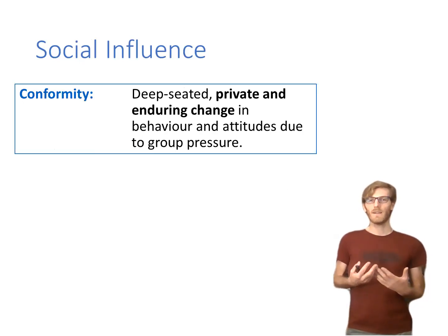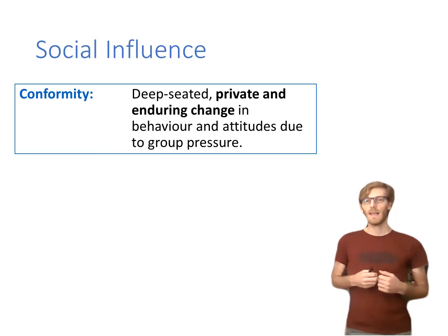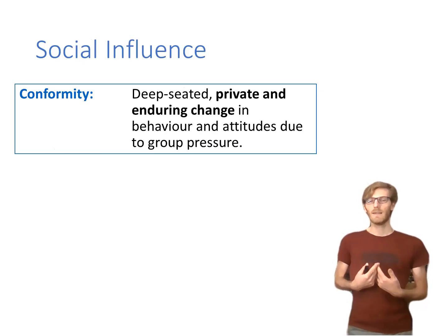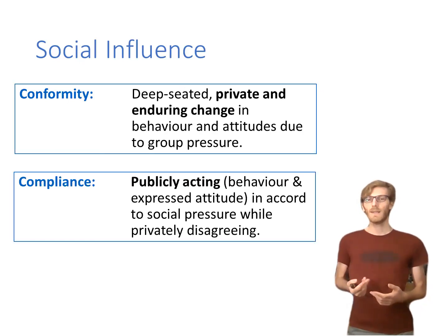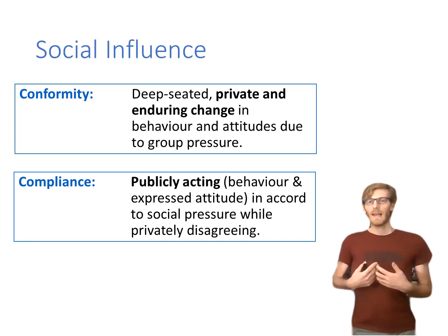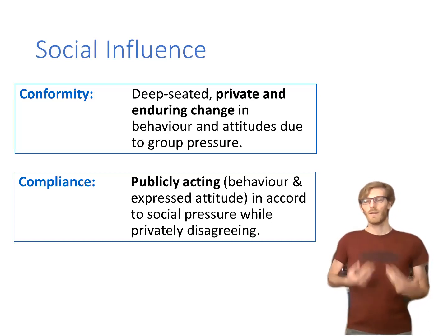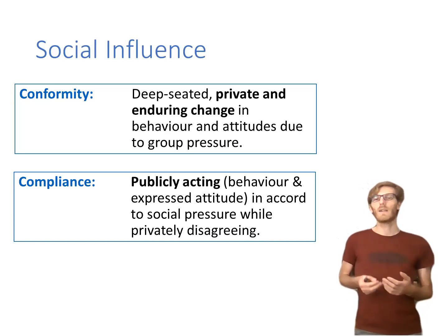When we think about the concepts behind social influence, the first is conformity — if I really change my beliefs based on group influence. In the Asch line study, that would mean genuinely thinking that whatever other people say is the true answer, rather than what my own eyesight tells me. Compliance is quite different: it's only about changing your exterior behavior. I publicly act in accord with what I believe the others expect, but privately I still believe we are all giving the wrong answer.